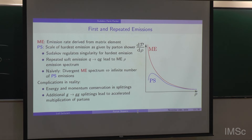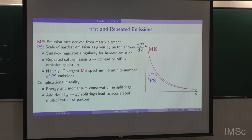The question we ask in a parton shower is different from what we compute in a matrix element. In a matrix element, you find the inclusive radiation pattern. In a parton shower, you ask for the scale of the hardest emission. The Sudakov factor regulates this compared to the divergent emission spectrum: if you include the probability of not having had a splitting before, the distribution no longer diverges but turns around at some point, creating the typical Sudakov peak structure.